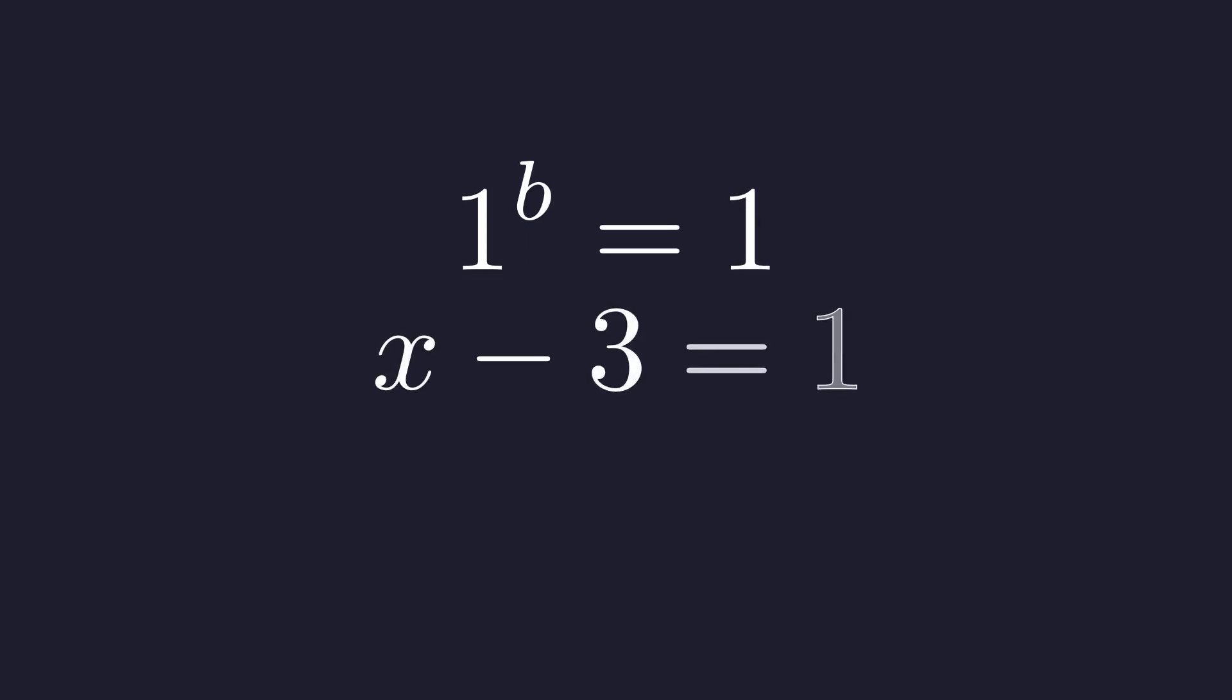So, we set our base, x minus 3, equal to 1. To solve for x, we isolate it.